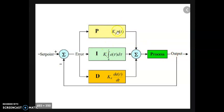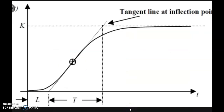Just imagine that I don't know the values of Kp, Ki and Kd. In the Ziegler-Nichols method, I am going to pick up the approximate values of Kp, Ki and Kd so that the process will produce better output. The output looks just like an S-curve — it's a reaction curve — and using this reaction curve I am going to find the approximate values of Kp, Ki and Kd.